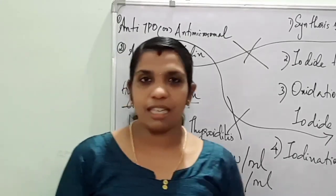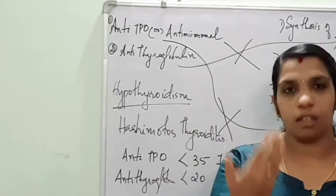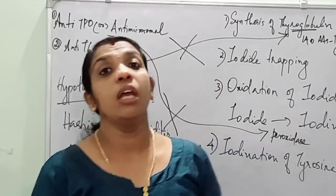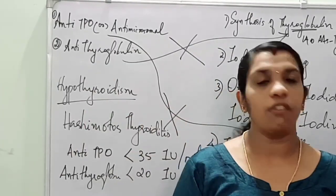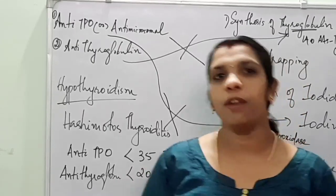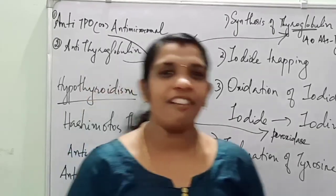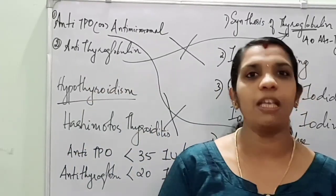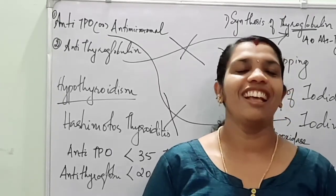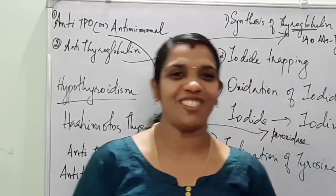If a patient is having hypothyroidism, please also go for these antibodies in order to diagnose autoimmune thyroiditis. Also, if one of the parents is suffering from autoimmune thyroiditis, it may be seen in children as well — please check for autoantibodies in children too. Hope you have understood this session clearly. If any doubt, please let me know in the comment box. Thank you for listening. Please subscribe and share. We will come with another topic next day. Thank you so much.